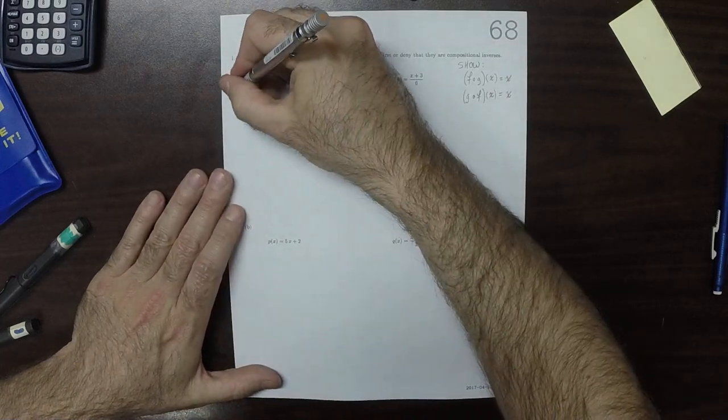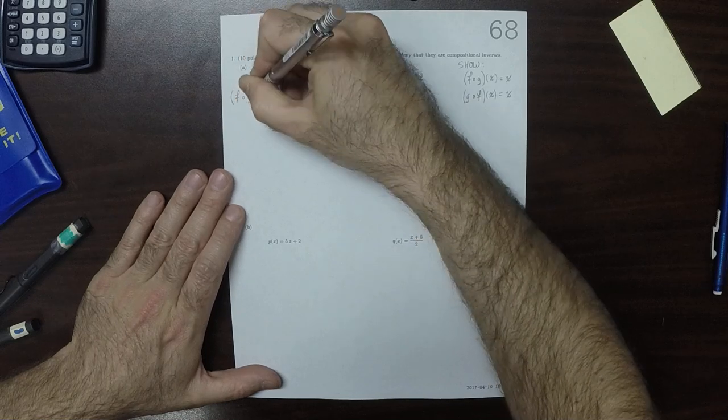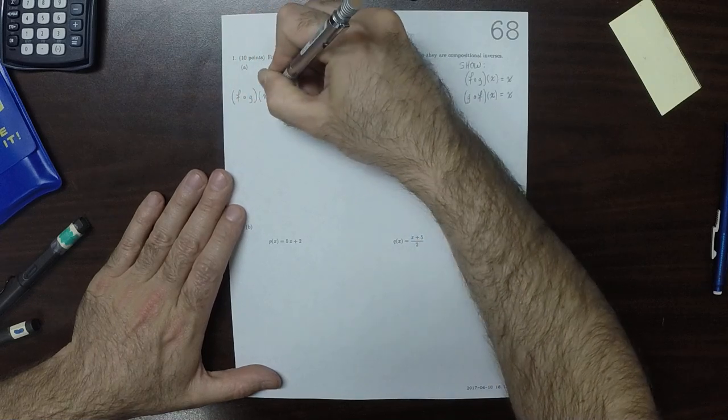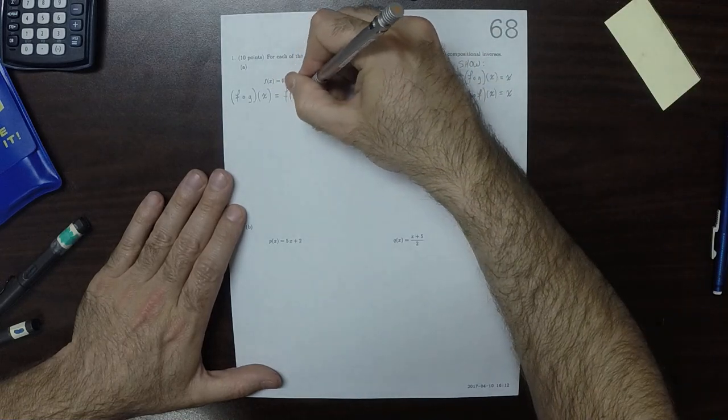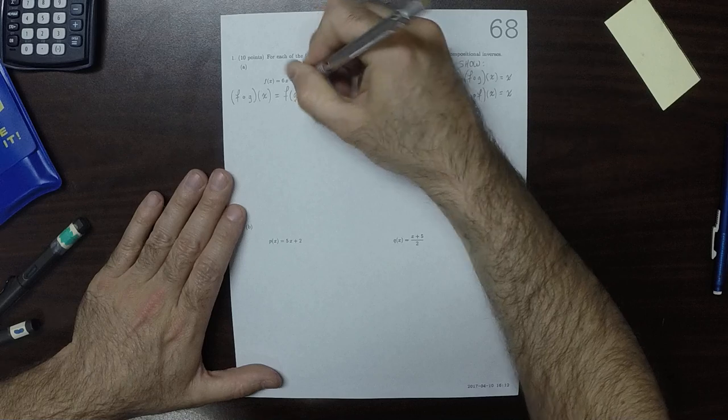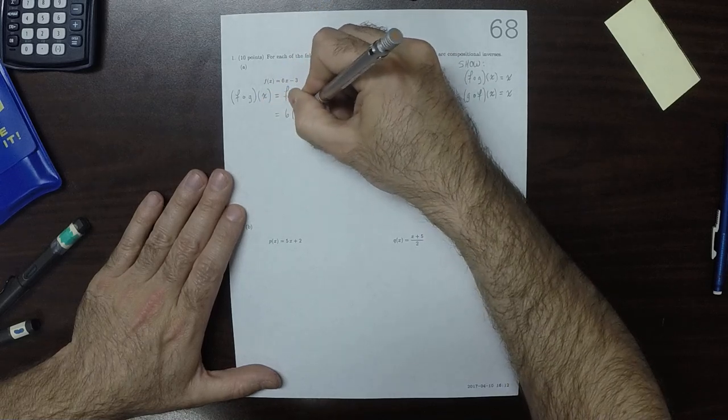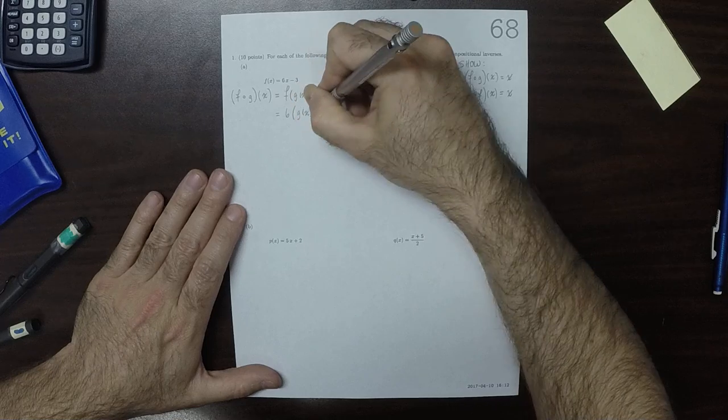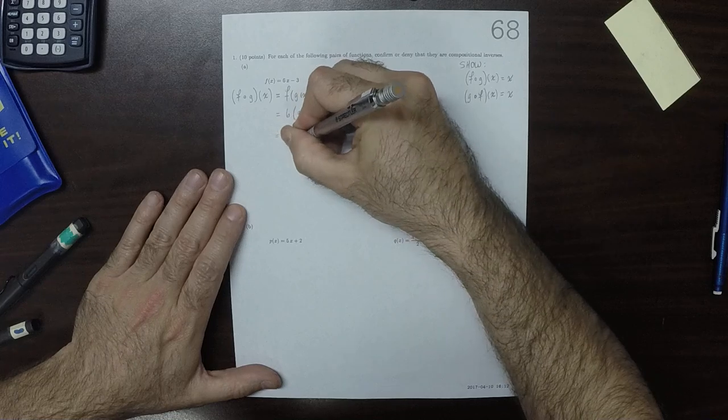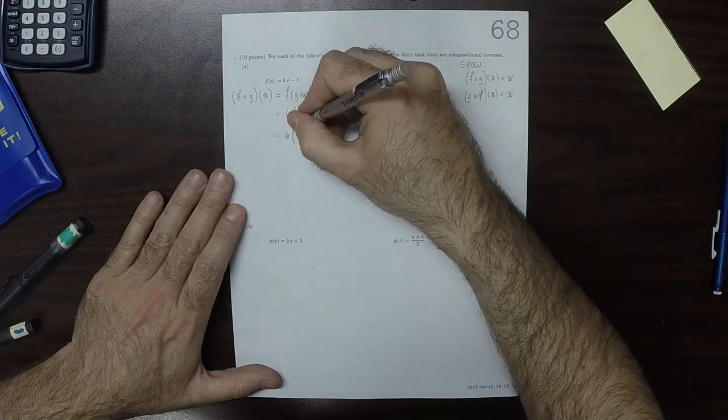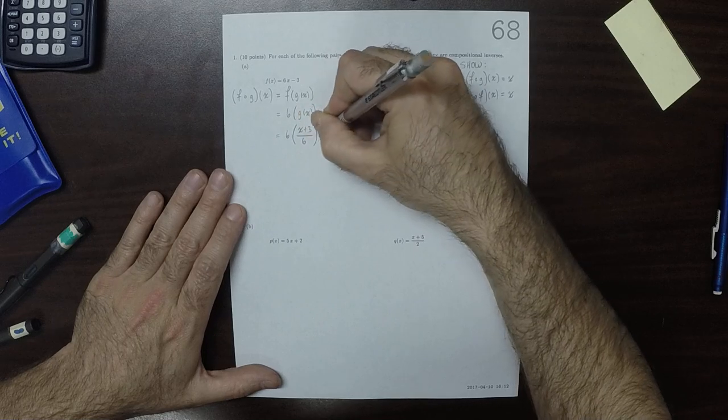So in the first place, f circ g evaluate at x. Well, that's f of g of x and that is 6 g of x minus 3 and that is 6 x plus 3 over 6 minus 3.